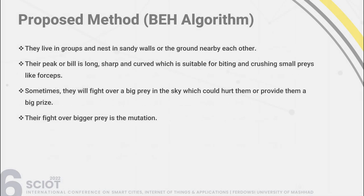They live in groups and nest in sandy walls or the ground nearby each other. Their beak or bill is long, sharp, and curved, suitable for beating and crushing small prey like forceps. Sometimes they will fight over a big prey in the sky, which could hurt them or provide them a big prize. This fight over a bigger prize serves as the mutation operator for this algorithm.